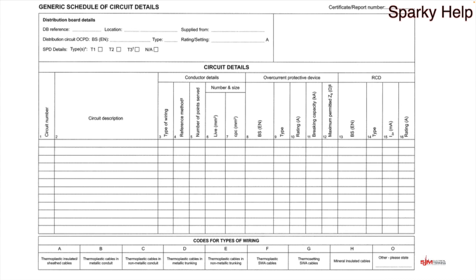Let's start with the easy bits at the top. DB reference — that's whatever the distribution board happens to be called. If it's in a house and there's only one, then it is the main distribution board or whatever you want to call it. But within a large commercial building it could be any number of distribution boards and whatever their numbering system happens to be.